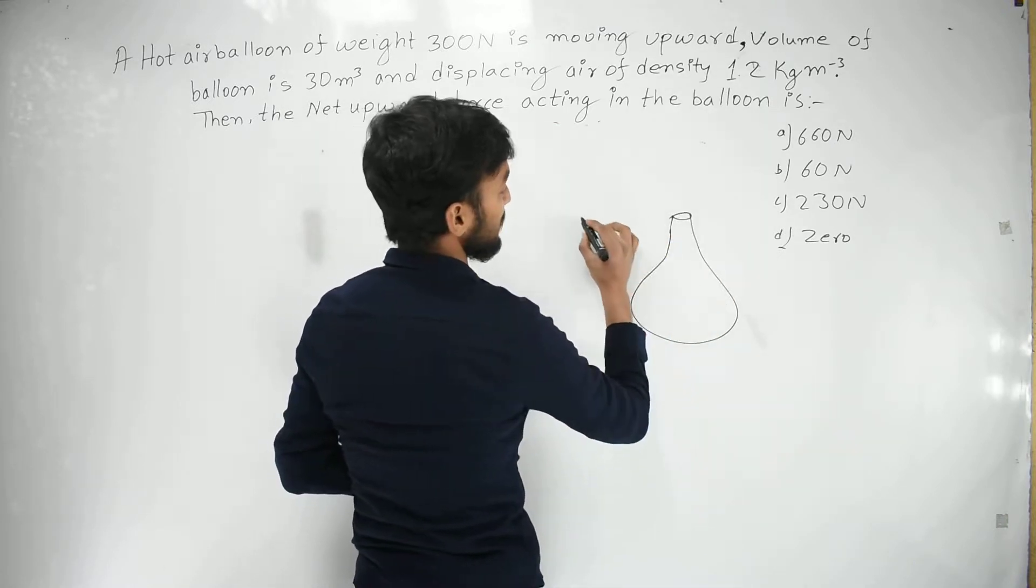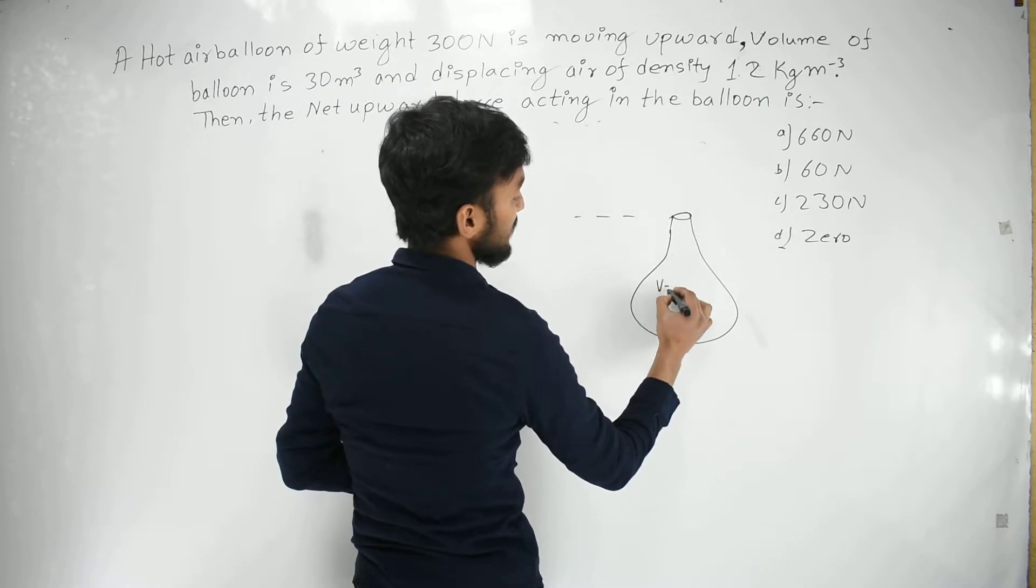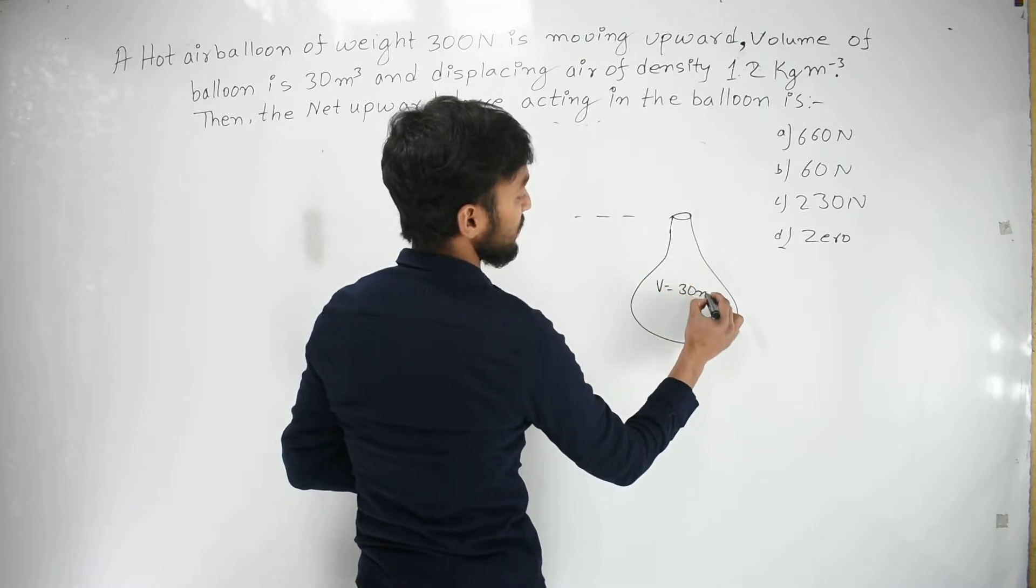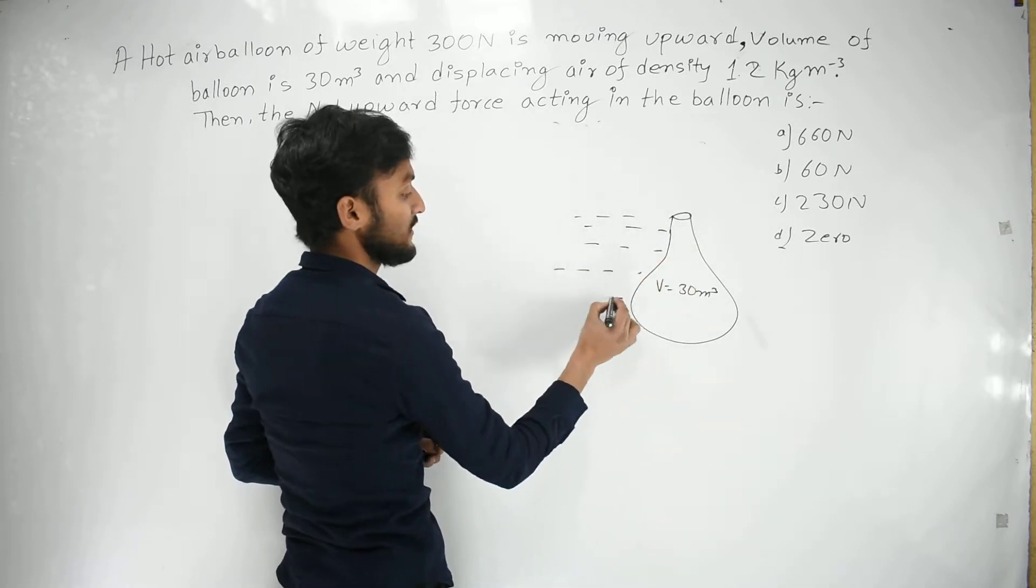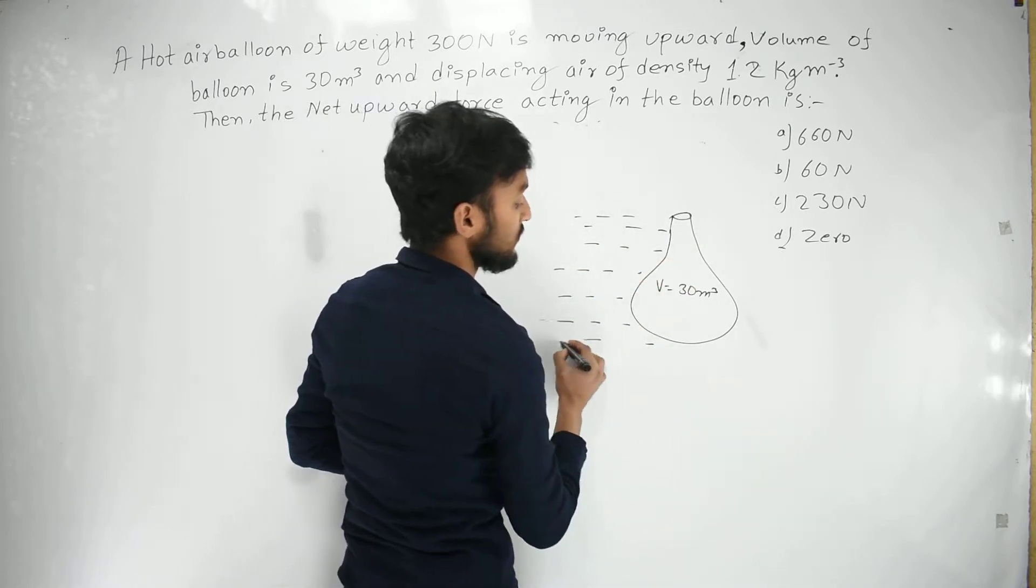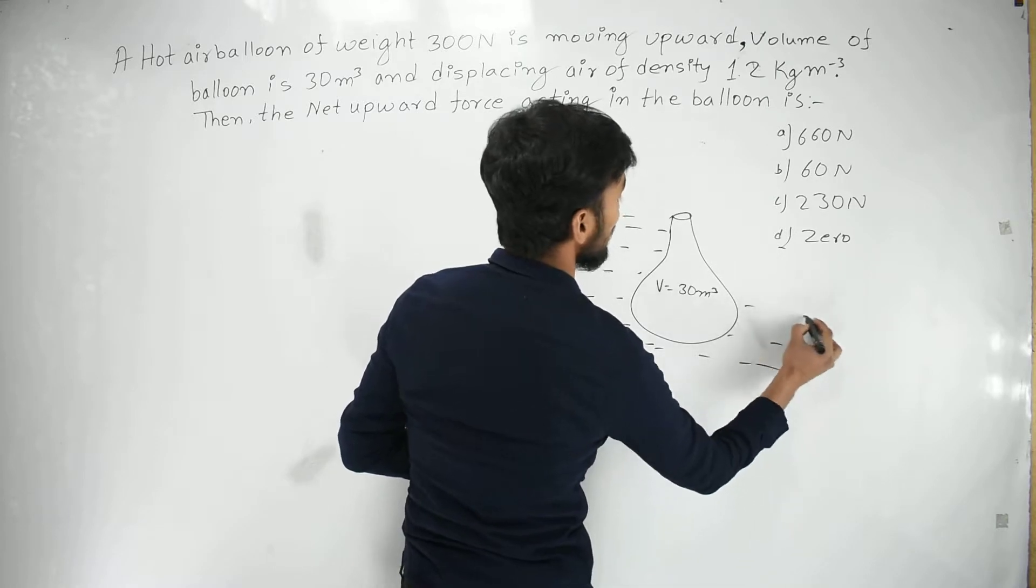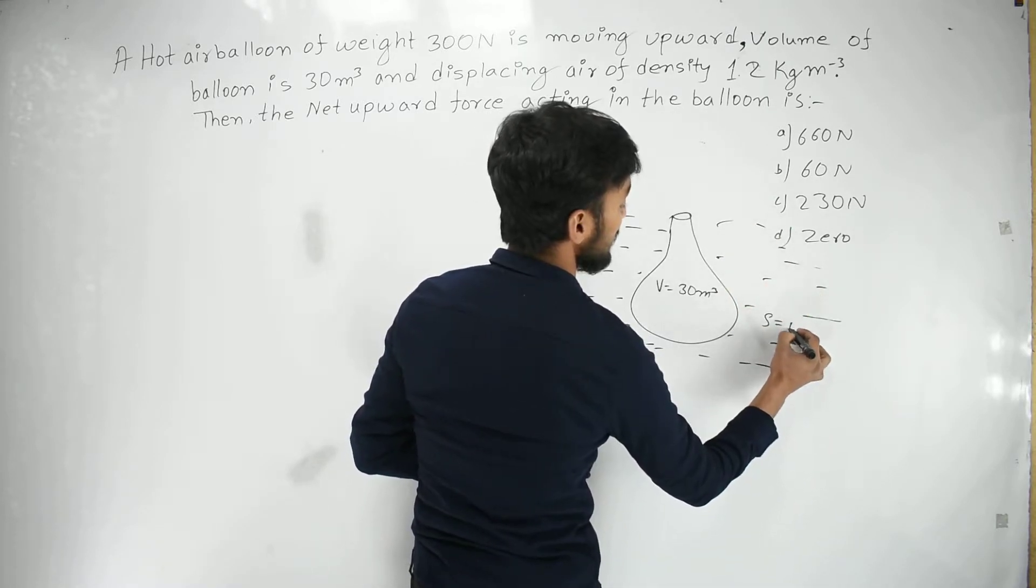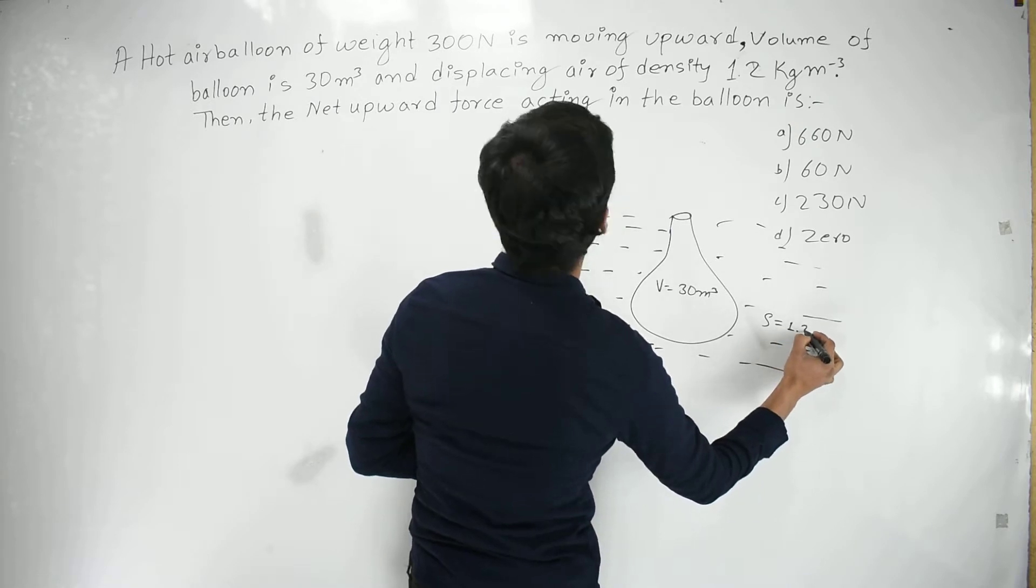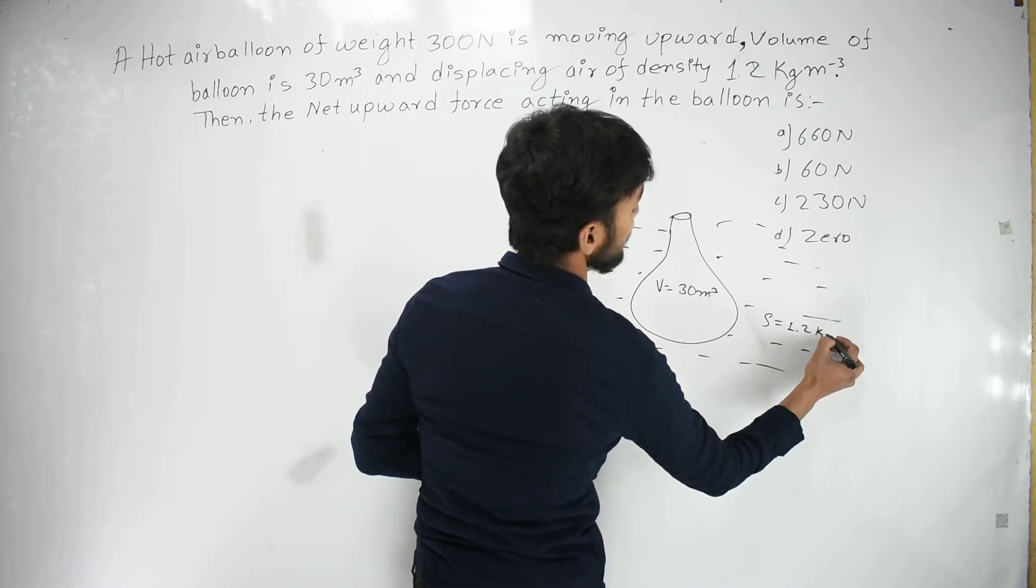The balloon is 30 cubic meters and in air medium, the density is 1.2 kg per cubic meter.